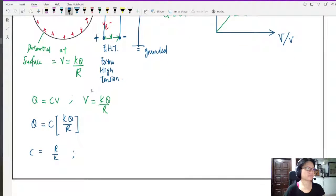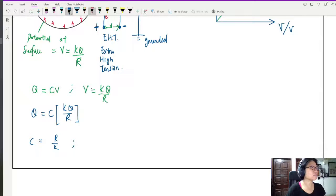But wait a second. Q is canceled out, and then I'll get C is equal to R over K by rearranging. So let us recall that this K is actually a short-form writing of 1 over 4 pi epsilon not, your permittivity of free space.